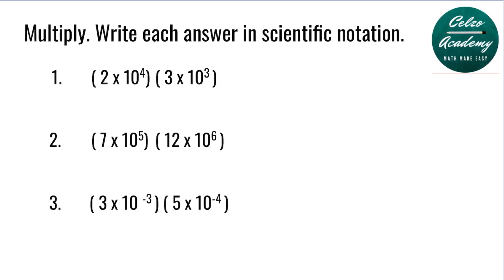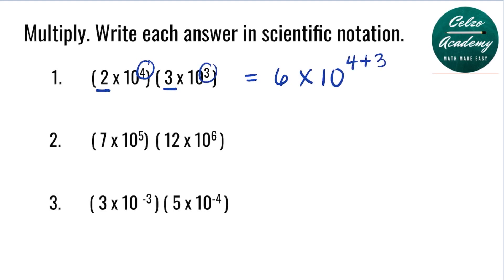Question number one: 2 times 10 to the fourth, multiplied by 3 times 10 to the third power. In multiplying scientific notation, we simply multiply the a values 2 and 3, which is 6. The exponents are 4 and 3, and we need to add those exponents. So the answer is 6 times 10 to the power of 7.